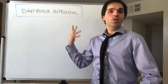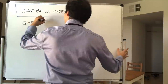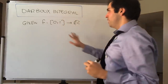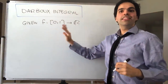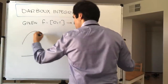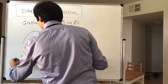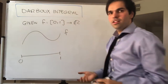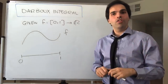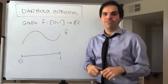As usual, the goal is to find the area under a function. Suppose I give you a function f from [0,1] to ℝ. Very importantly, I do not assume yet that f is continuous. The goal is to find the area under the graph of f over the interval [0,1]. The approach is almost exactly the same as for Riemann integrals, and in fact one can show that Darboux integration is equivalent to Riemann integration.